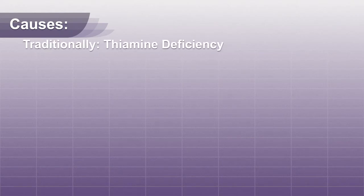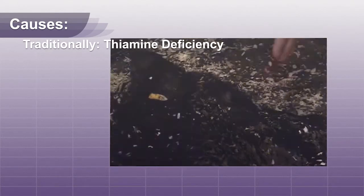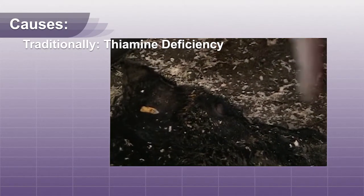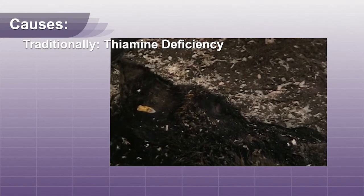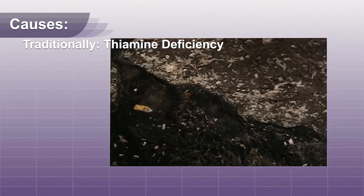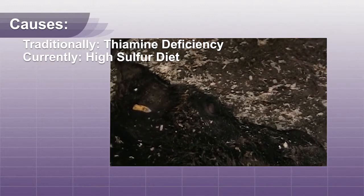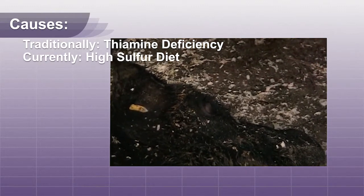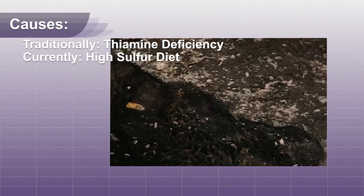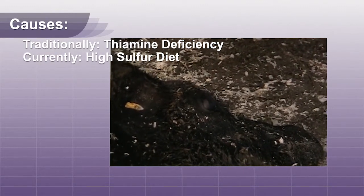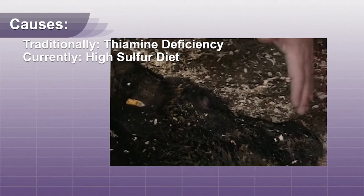Causes: traditionally, thiamine deficiency was considered the cause of polio encephalomalacia. Today, a high sulfur diet is more commonly implicated as the cause.